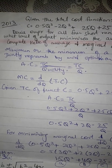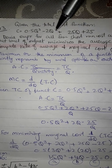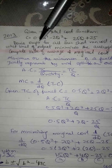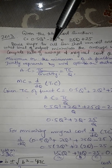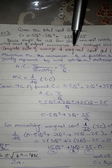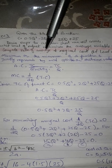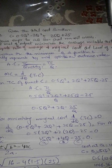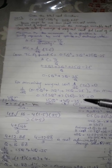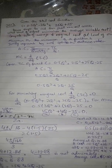The 2013 question gives total cost function c equals 0.5q³ minus 2q² plus 35q plus 35. Derive expressions for all four short-run cost curves, find the output level that minimizes average variable cost, and compute values of average and marginal cost at that output level. This is a long question and the full solution is available in the book.